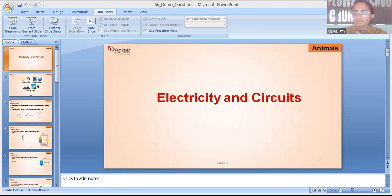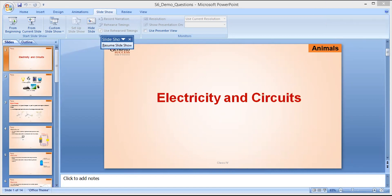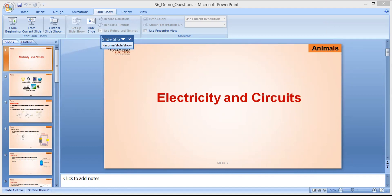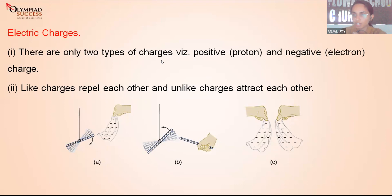For today's topic I have taken Electricity and Circuits. Many of you may know about it. Kirti, what did you learn in this chapter? Anyone can answer or type in the chat box. In Electricity and Circuits, did you learn something about charges? How many types of charges do we have? Okay — there are two types of charges: positive and negative. You might have studied the structure of an atom — matter consists of atoms, and in atoms we have positive and negative charges.